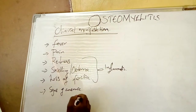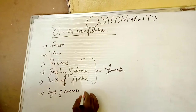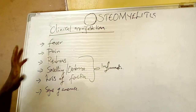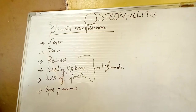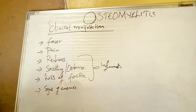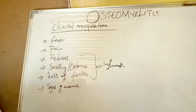The patient will also have signs and symptoms of anemia, including tachycardia and cyanosis. These are the clinical manifestations for a patient who has got osteomyelitis.